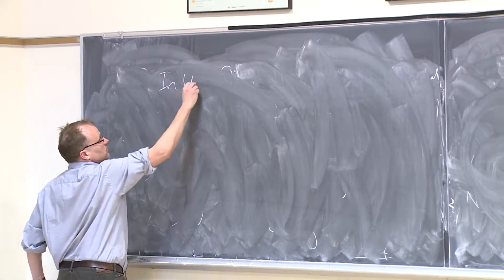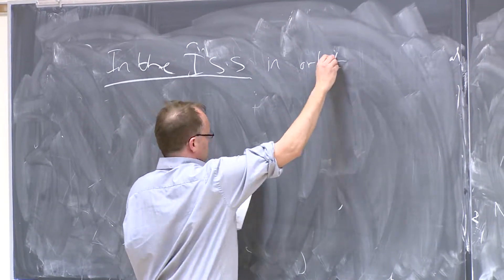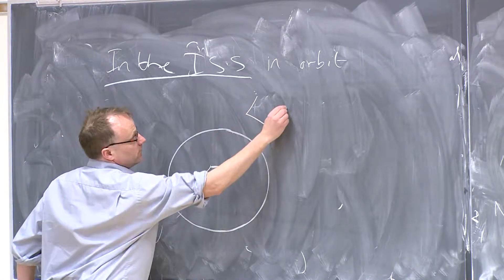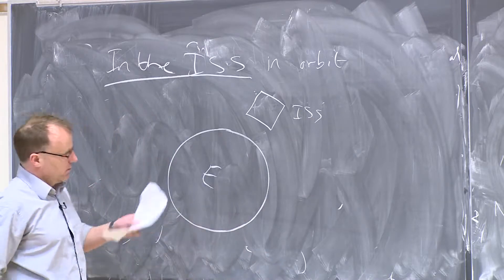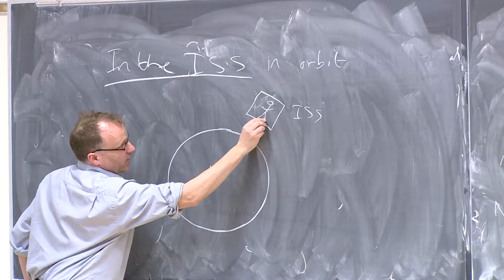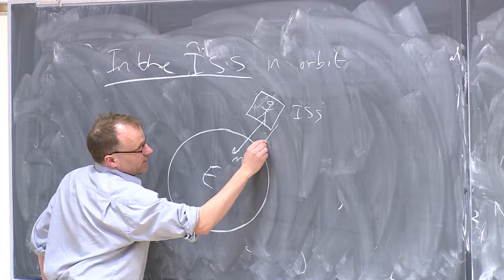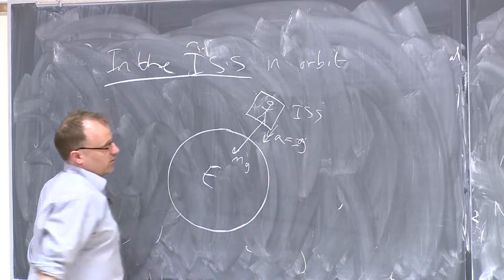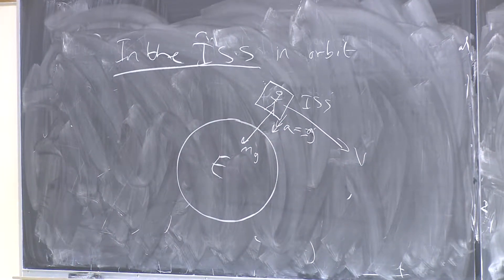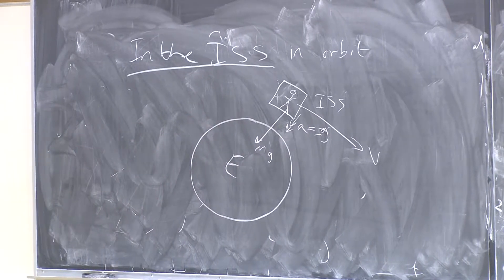In the ISS, in orbit, you basically have the situation where the space station is above the Earth. This is our ISS — you have a person standing in it. The force of gravity on the person and on the spaceship are both mg. So the spaceship is accelerating with an acceleration equal to minus g, but it's traveling with a velocity v. So this is identical to the elevator falling — it's as if the cable snaps, it's the identical situation.